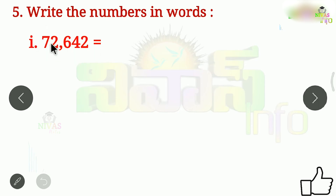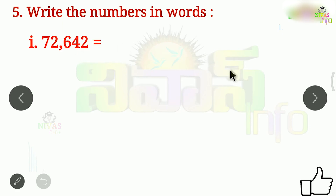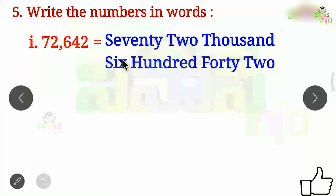Here we go to the first word: 72,000. Next is the 100th place — 6 in the next place is 600. Next is 4 in the next place: 40. And 2 in the next place: 2. So we have 72,000 and 642.